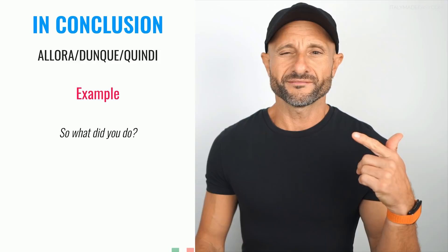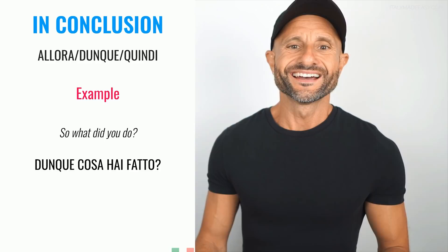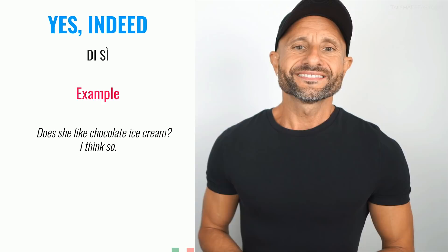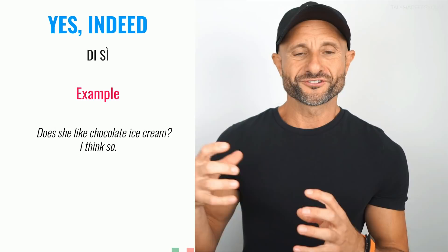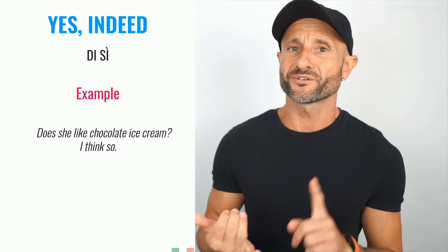Similarly: 'So, what did you do?' Think of it as 'in conclusion, after everything you told me, what did you do?' — that's the feeling. Now, SO can also mean 'yes indeed' as in 'I think so.' In Italian we don't use allora, quindi, or dunque here. We say di sì. 'Does she like chocolate ice cream? I think so.' → Le piace il gelato al cioccolato? Penso di sì. You cannot say penso sì — the di is required.